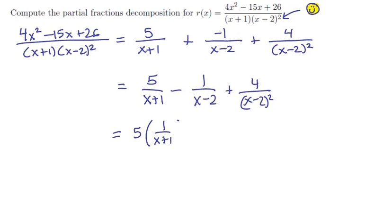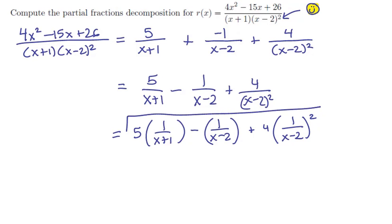We can also write it as 5 times 1 over x plus 1, minus 1 over x minus 2, plus 4 times 1 over x minus 2 quantity squared. Either one of these is acceptable, although we prefer the latter one for calculus.